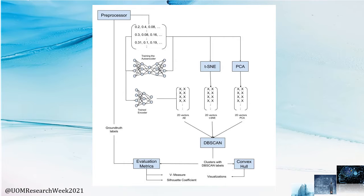The k-mer frequency matrix is used to train our autoencoder. The trained autoencoder is then fed the same matrix again to obtain a reduced-dimensionality representation. We do the same with T-SNE and PCA. To evaluate the clusters, we use DBSCAN to obtain cluster labels, which are then compared with the real ground truth labels saved by the preprocessor. Evaluation metrics are applied to those labels and data points to get a measure of the three techniques.